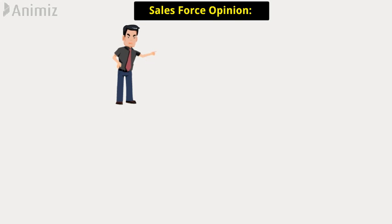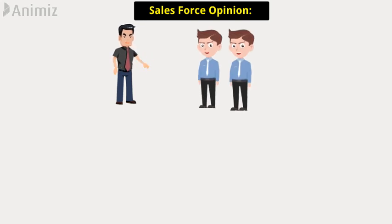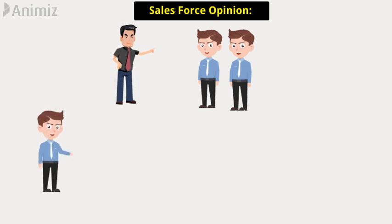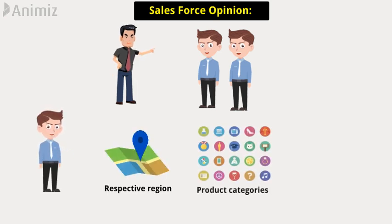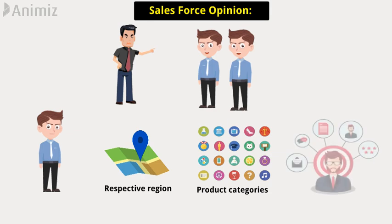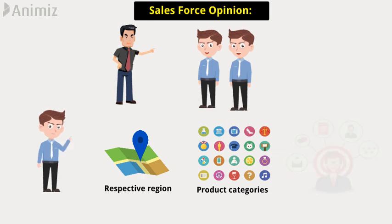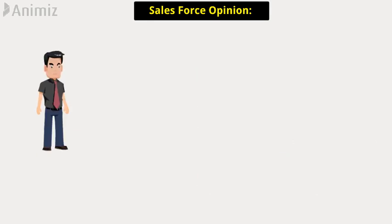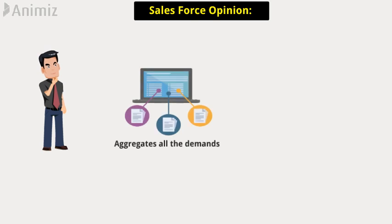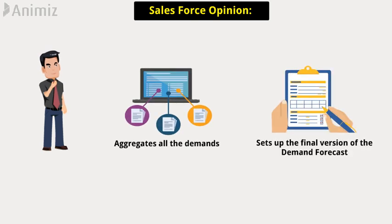Sales force opinion: The sales manager asks for inputs of predicted demand from every salesperson in their team. Each salesperson evaluates their respective region, product categories, and serves their individual customer demand. Eventually, the sales manager aggregates all the demands and sets up the final version of the demand forecast after management's opinion.